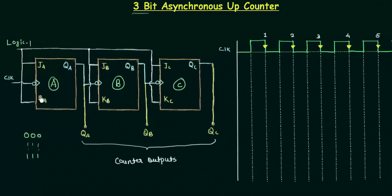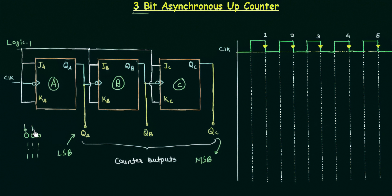Using this timing diagram we can find out how the counter actually counts, from what point it starts and at what point it ends. I have taken QA, QB, and QC as our outputs. QA is the LSB (least significant bit) and QC is the MSB (most significant bit). So the leftmost bit is QC, the middle one is QB, and the rightmost is QA.